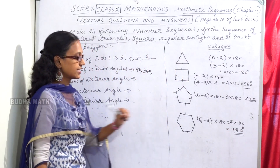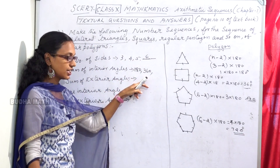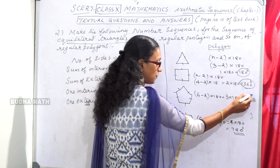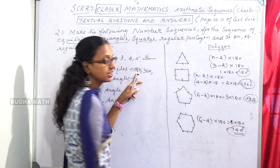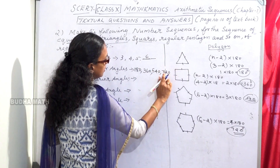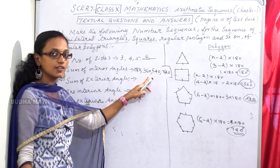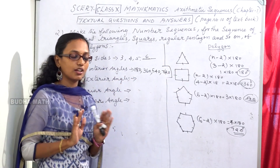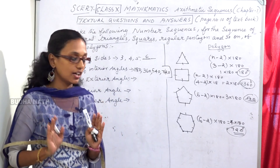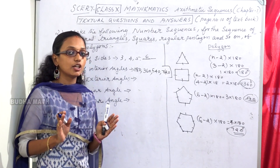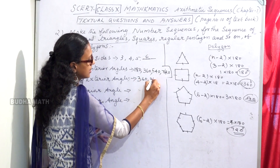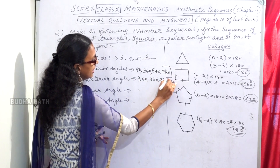We have the sum of interior angles: triangle is 180, square is 360, pentagon is 540, hexagon is 720. For the exterior angles, all polygons have the sum of exterior angles equal to 360 degrees. The sequence of exterior angles is 360, 360 — all are 360.